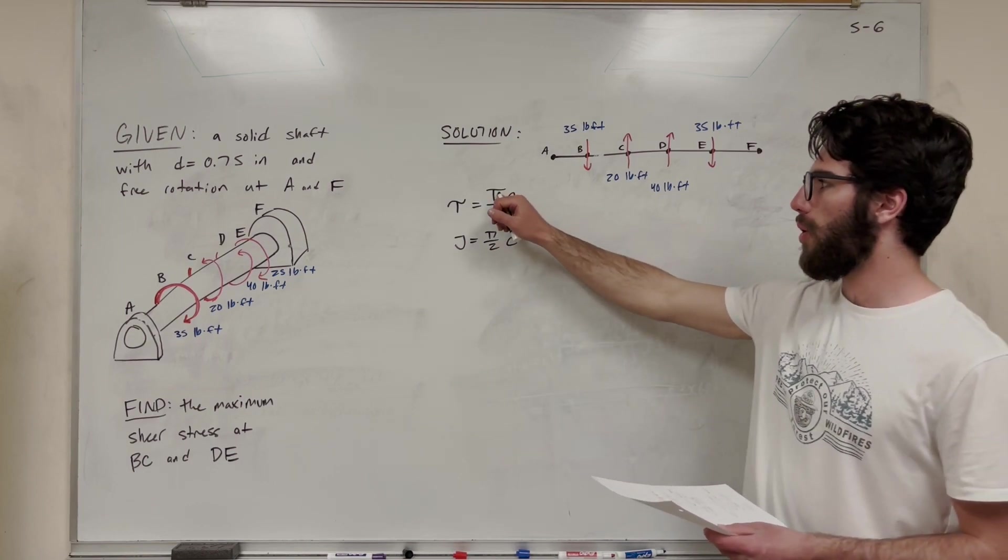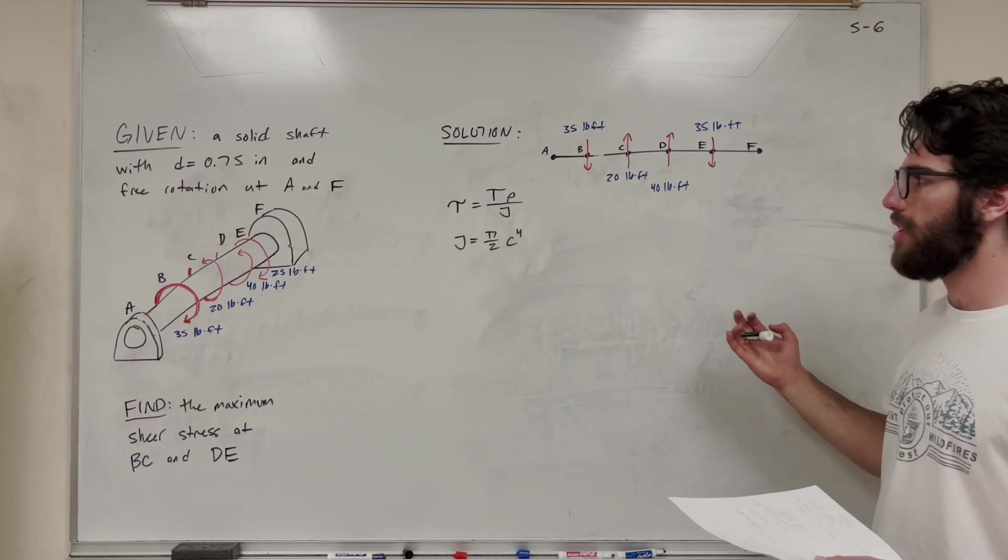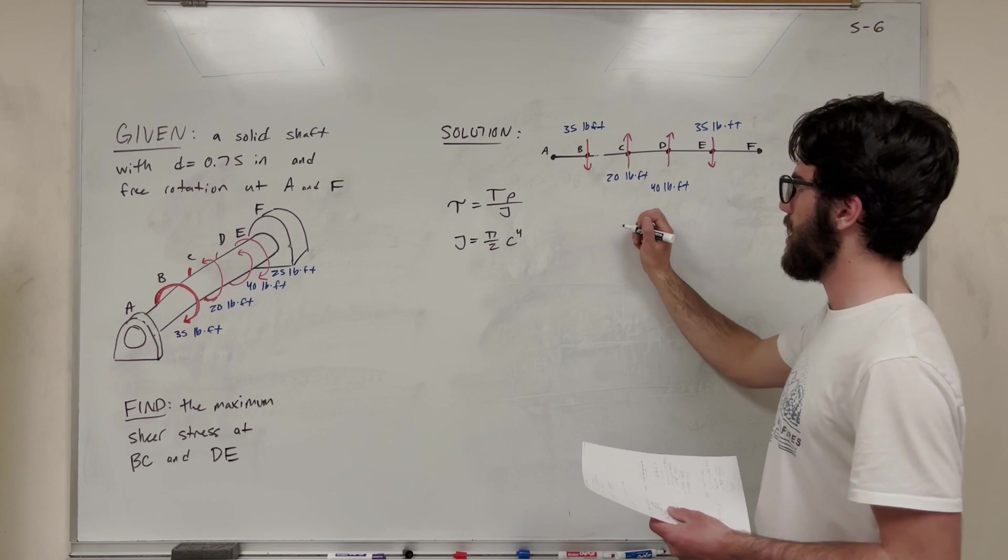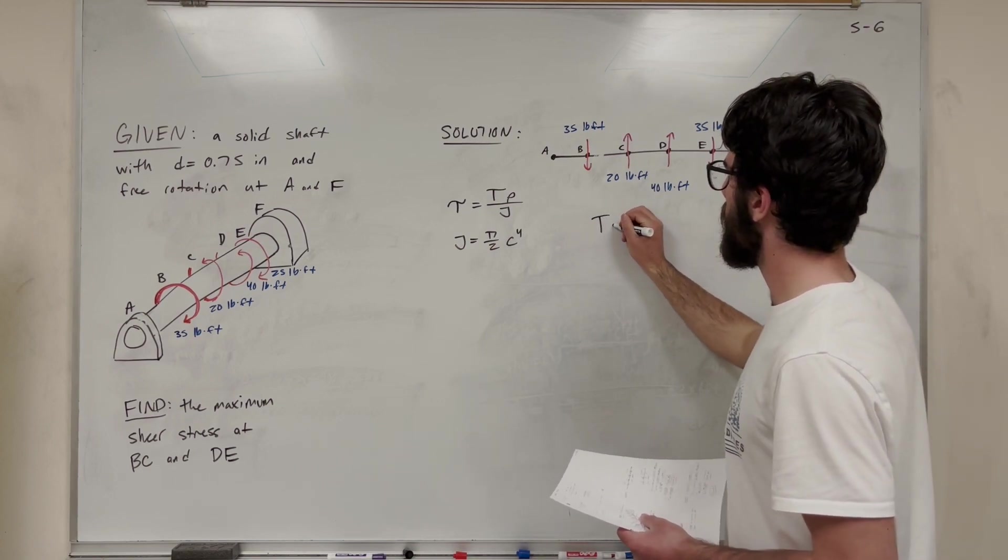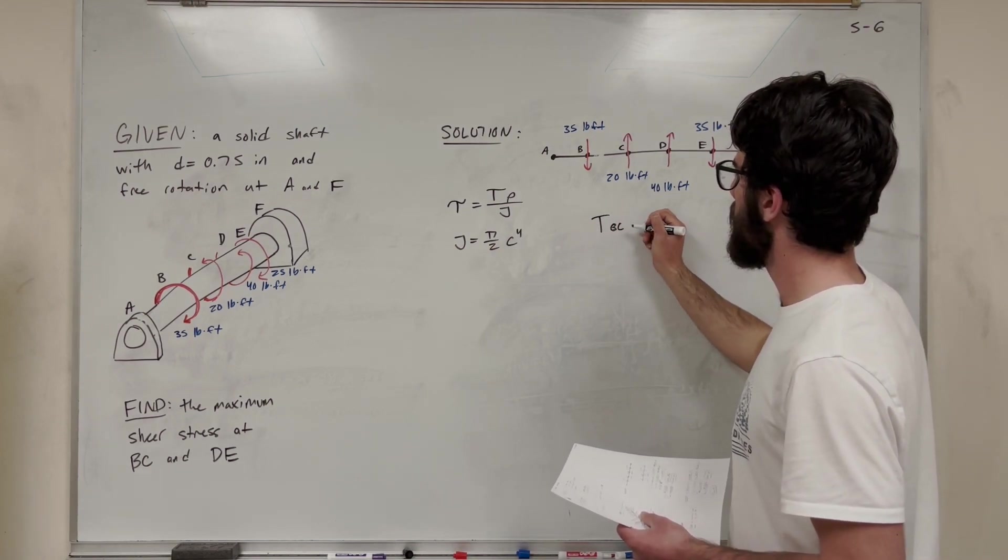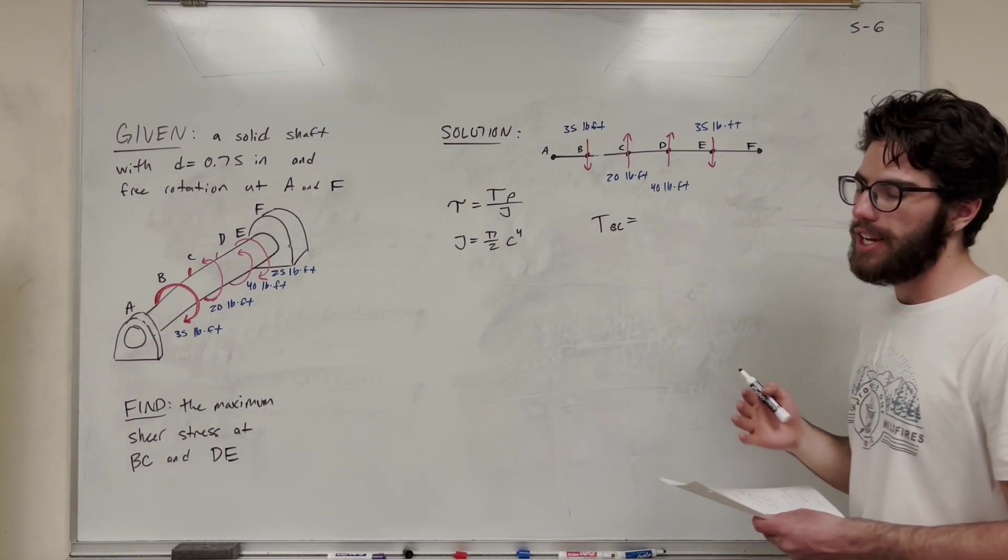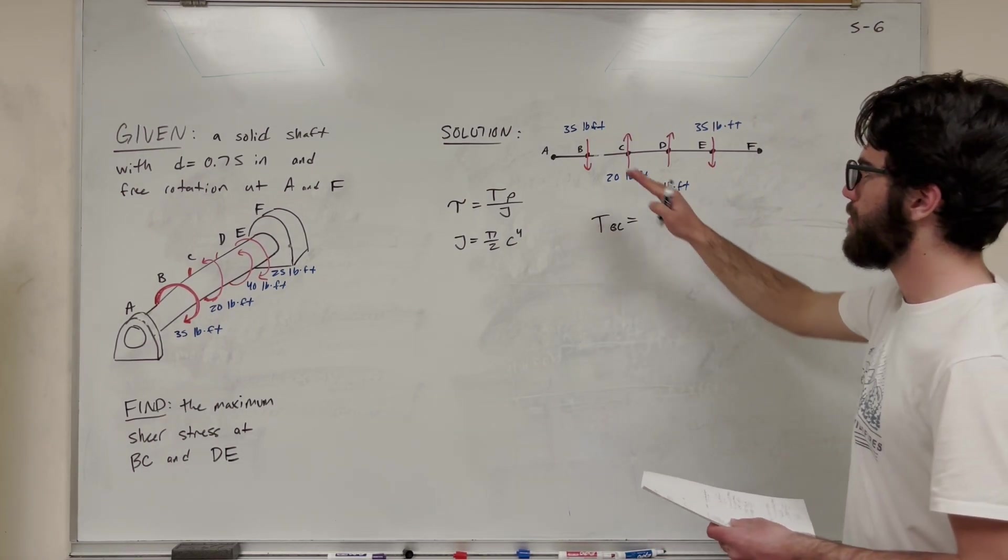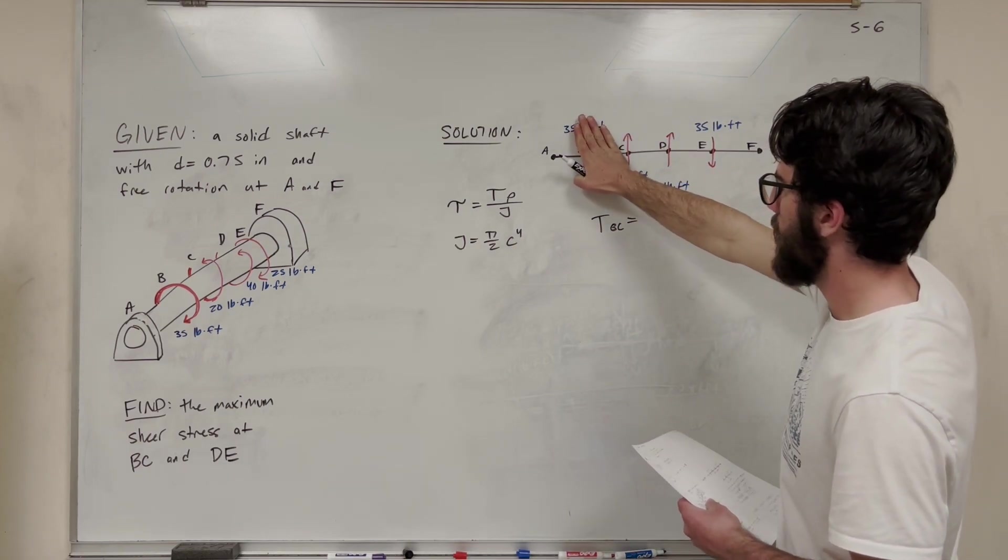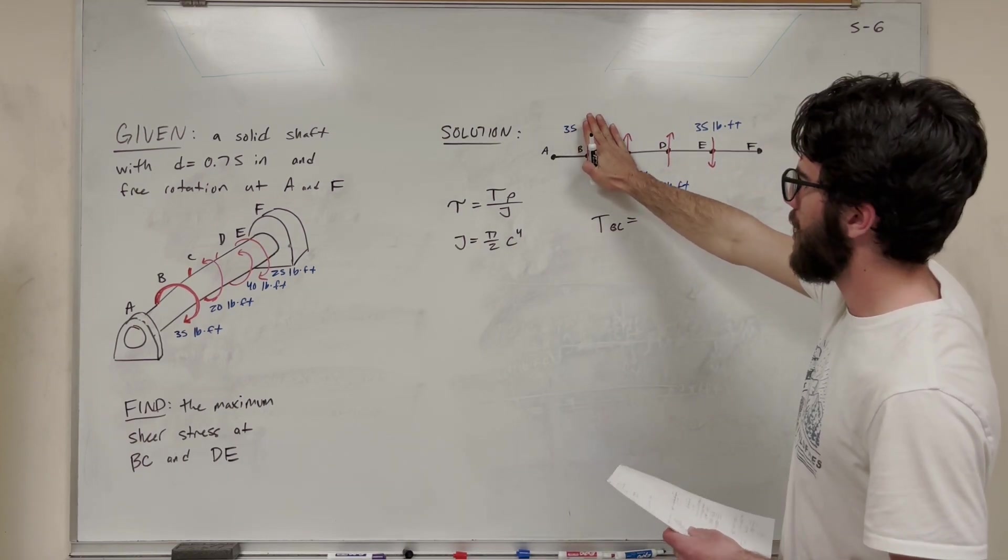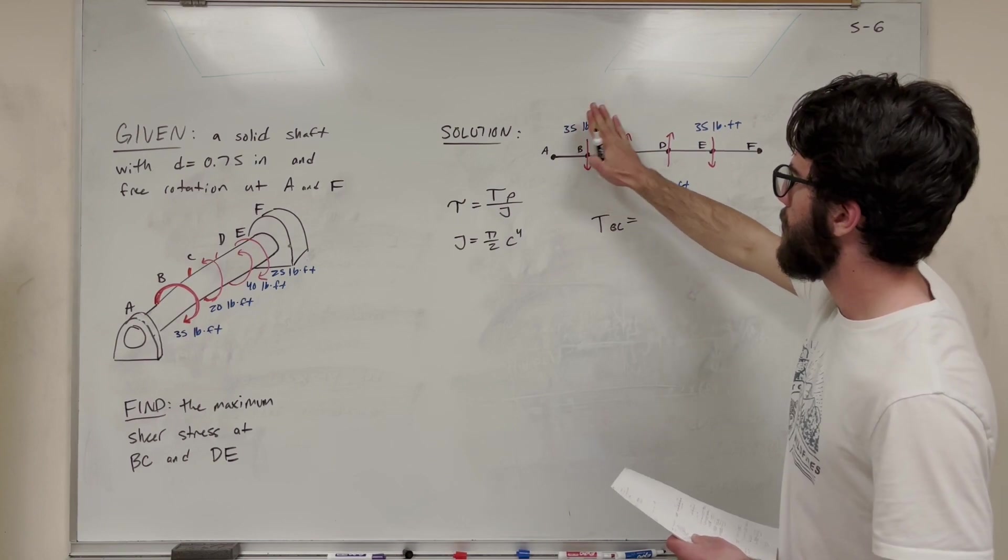So first of all we need to find the torque in our sections that we're looking for. So let's find the torque in BC first. So torque in BC, what is that going to be equal to? Well if you go by, it's kind of like taking the shear, right? You're going to basically add up. So from A to B, there's no forces acting yet. So we know that our torque is going to be zero there.